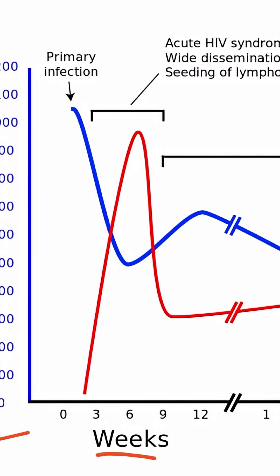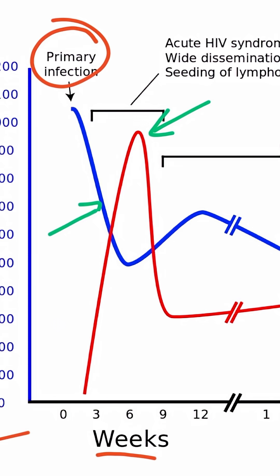When a patient is first exposed to the virus, or during the primary infection, the viral load rises, as you can see by the steep red line right here. The CD4 count begins to fall, as CD4-positive cells are destroyed by the virus, as indicated by the blue line beginning to drop off.